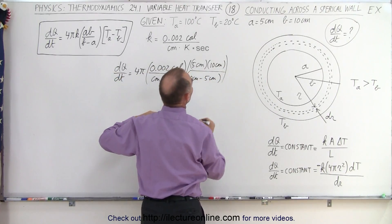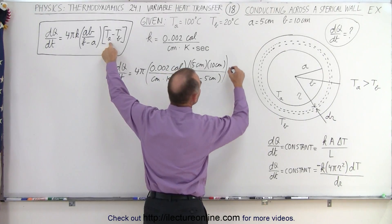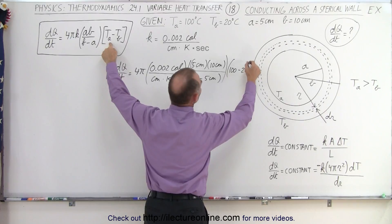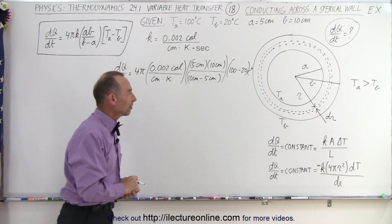and the whole thing multiplied times the difference in the temperature TA minus TB which is 100 minus 20. And that would be centigrade degrees, that's the difference in the temperature.